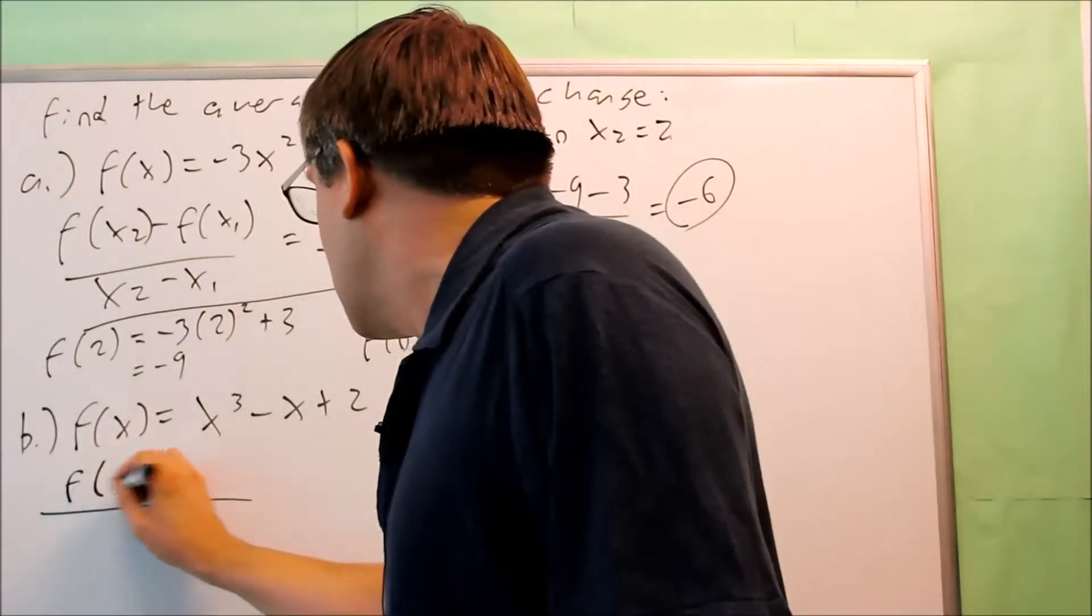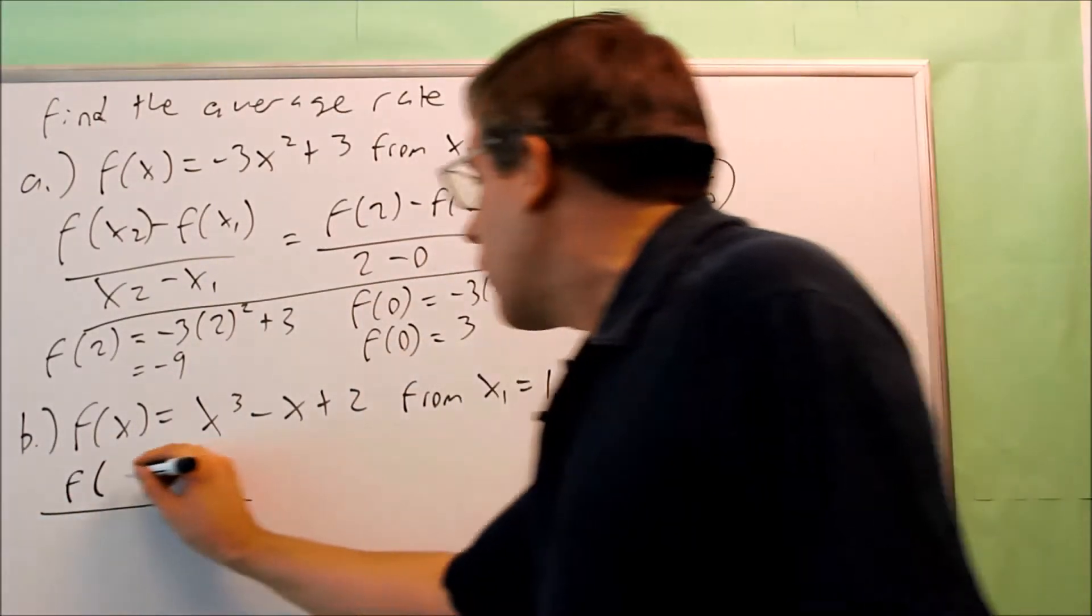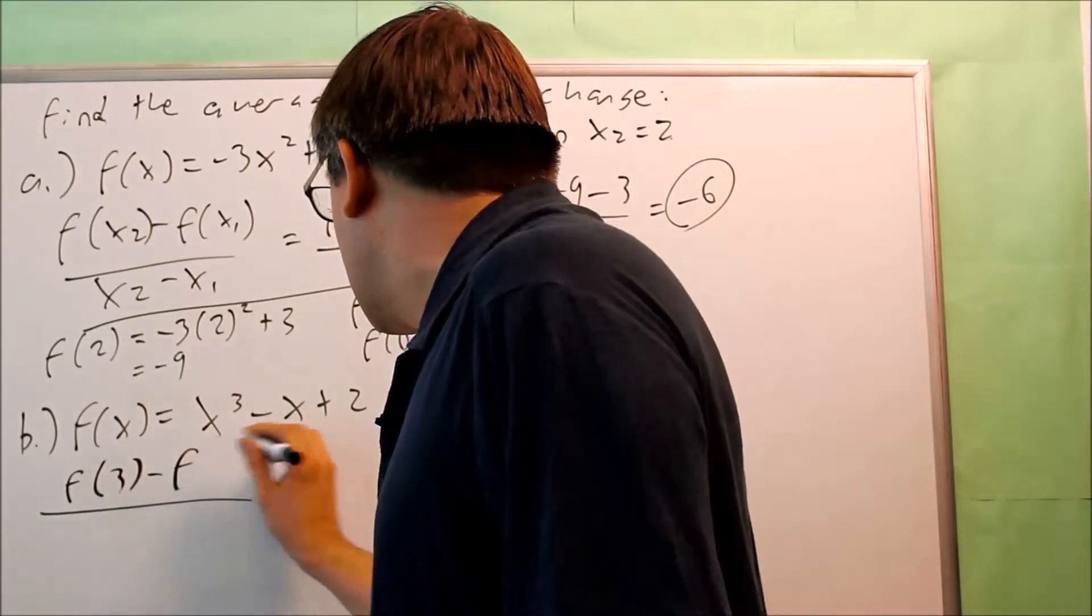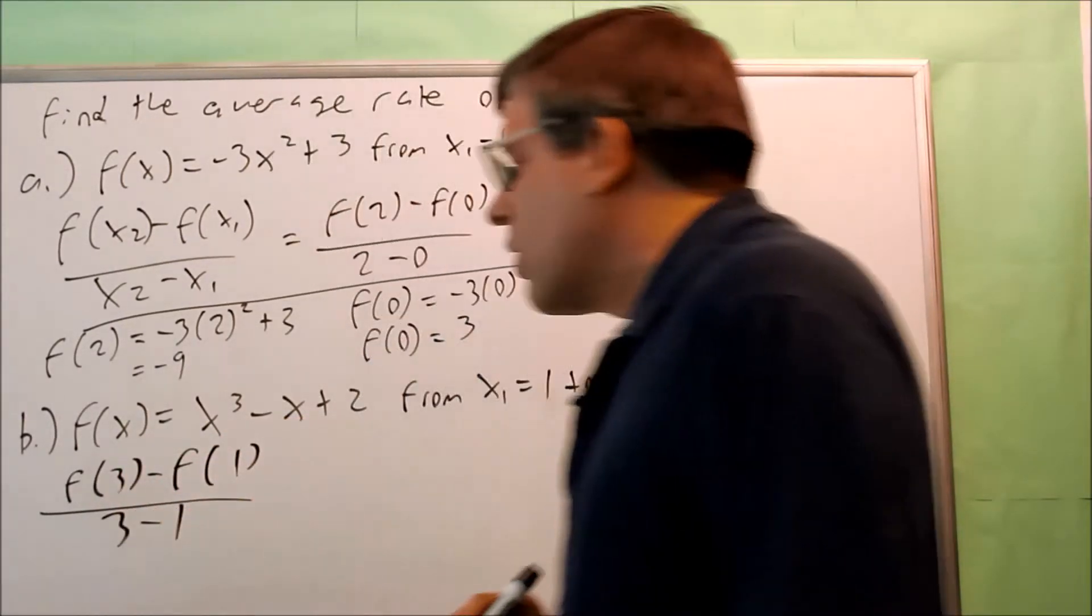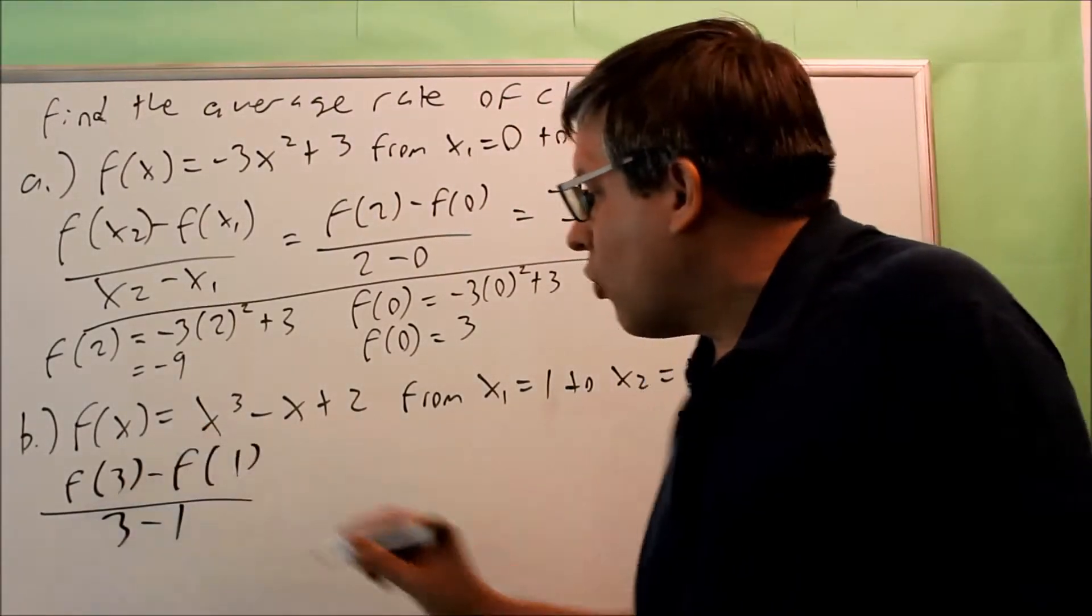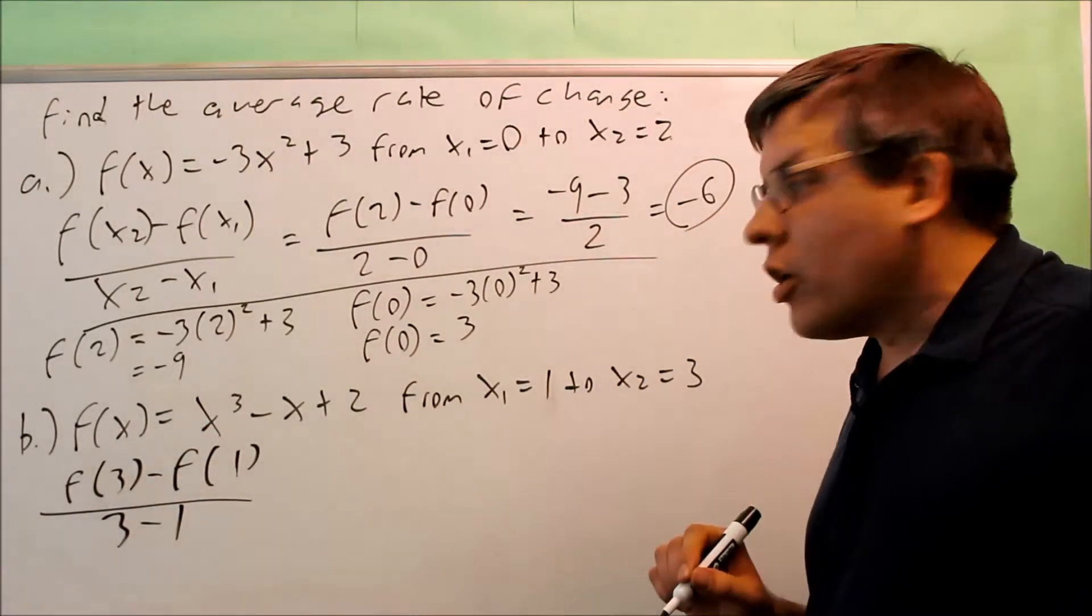Now when we put in the numbers, that's going to be f of x2, that's 3, f of 3 minus f of 1, all over 3 minus 1. So we need to figure out what f of 3 and what f of 1 are.